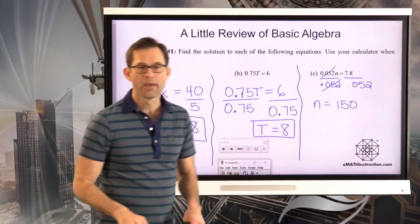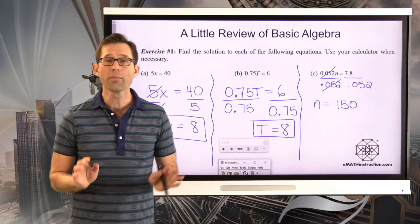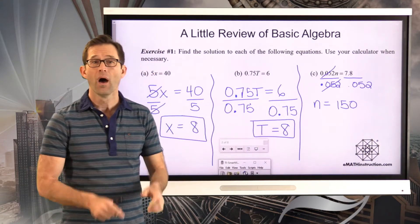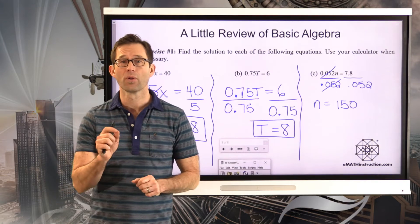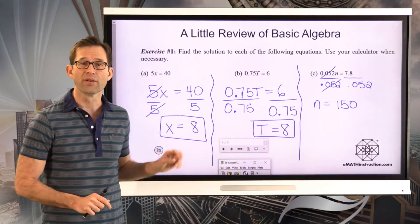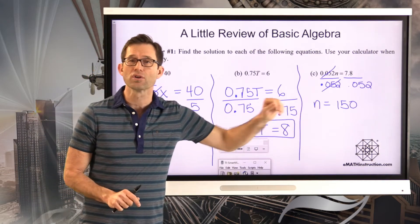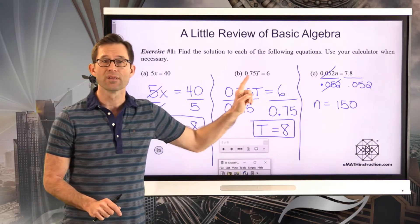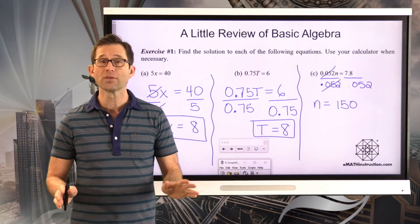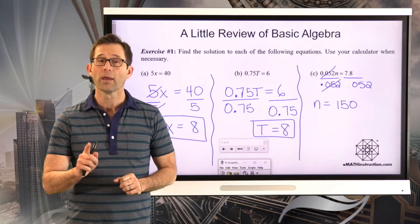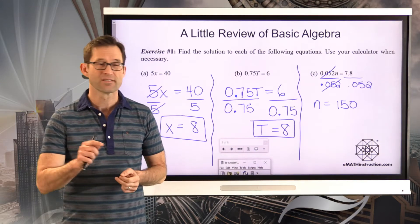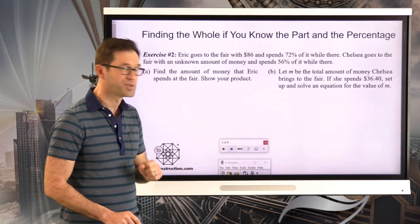In virtually every problem today, we're going to be solving an equation that has this form: a number times a variable equals another number. No matter what they look like, we'll always be able to solve them by simply dividing both sides of the equation by whatever number is multiplying our variable. So let's see how we can use that algebra and our knowledge of percentages in order to find the whole if we know the percentage and the part. Let's get into that in exercise number two.